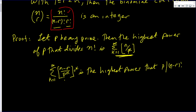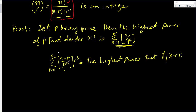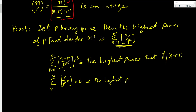If this sum equals s, then p to the s divides (n minus r) factorial, but no higher power does. Likewise, the summation of the floor of r over p to the k, as k goes from one to infinity — if this equals t, then p to the t is the highest power of p that divides r factorial.